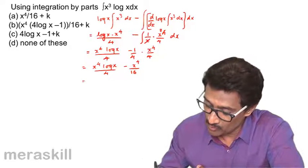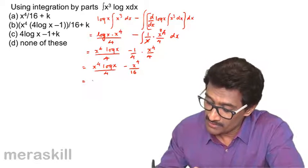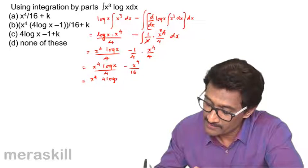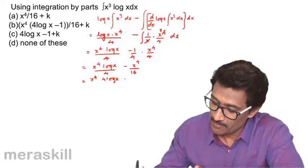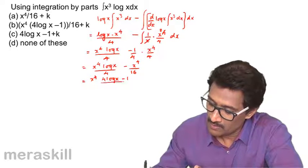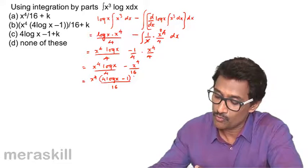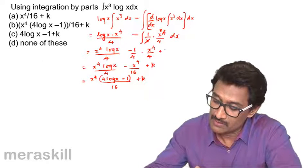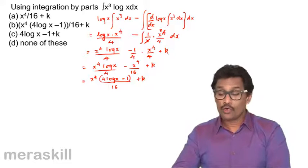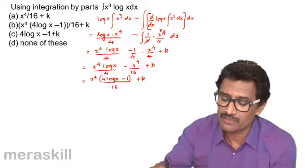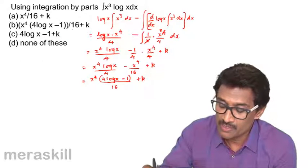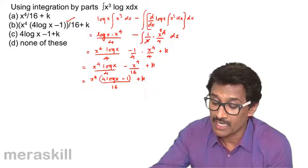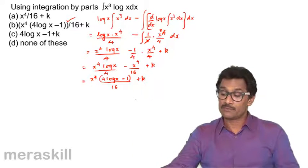Taking x⁴ as a common factor outside, we get x⁴·(4·log x - 1)/16 + k. This is the most simplified form matching the format of the given options, so the answer is x⁴(4·log x - 1)/16 + k.